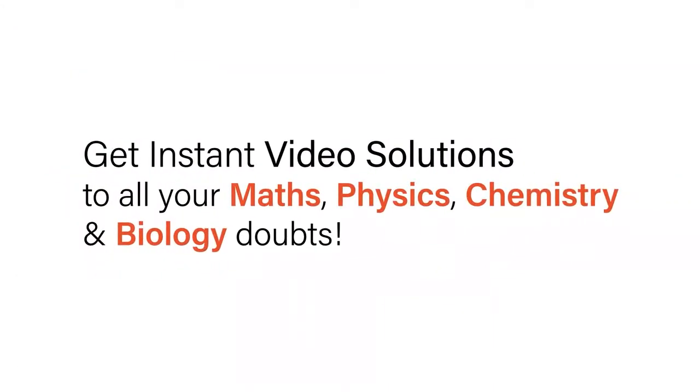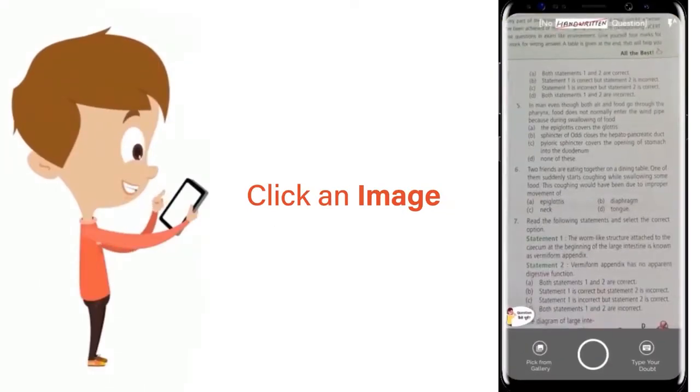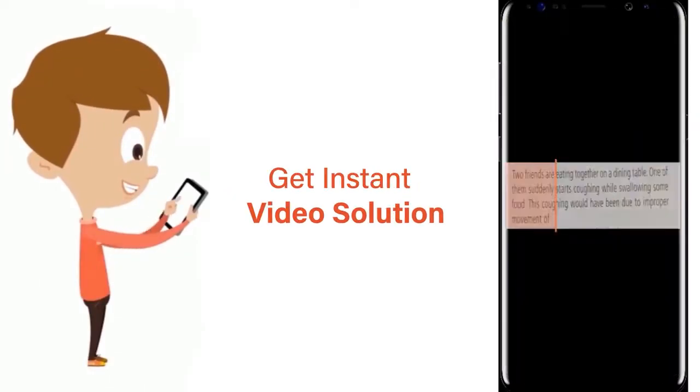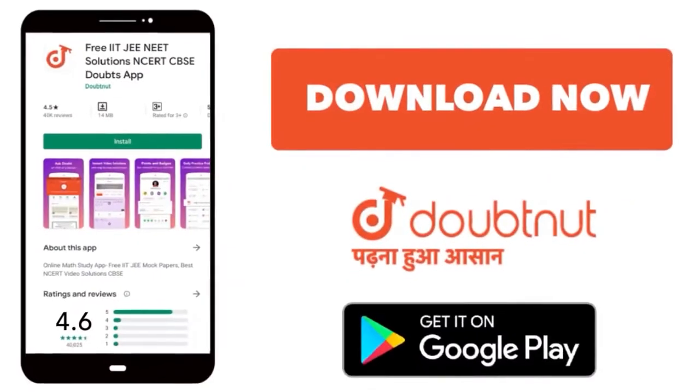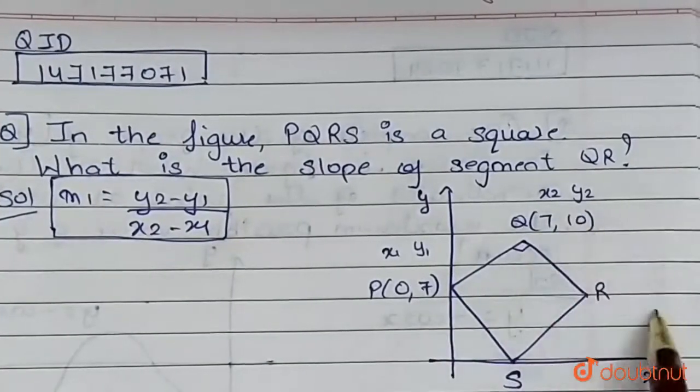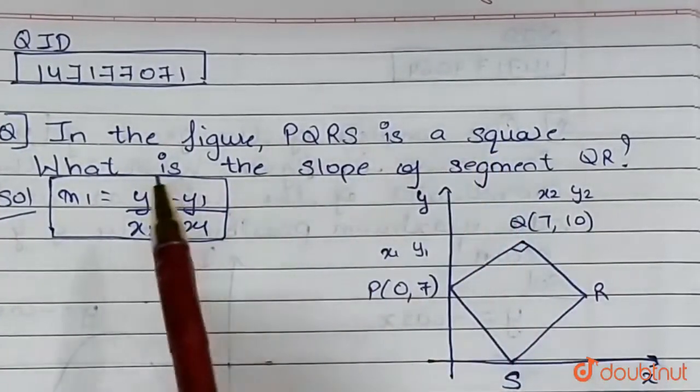With DoubtNet, get instant video solutions to all your math, physics, chemistry, and biology doubts. Just click the image of the question, crop the question, and get instant video solution. Download DoubtNet app today. Figure PQRS is a square. What is the slope of segment QR?